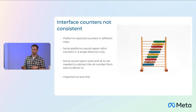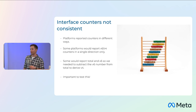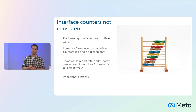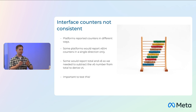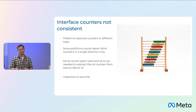Another niggling problem was that interface counters were not implemented consistently. We have V4 traffic and V6 traffic and want to run these counters independently. On one platform we could see total packets in and out, and IPv6 packets in and out, but nothing for V4 — so we had to derive the V4 traffic in the back end.